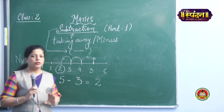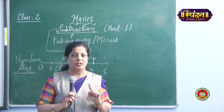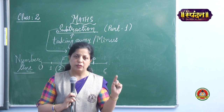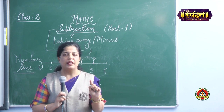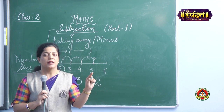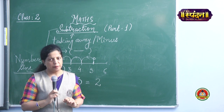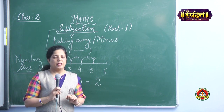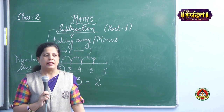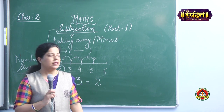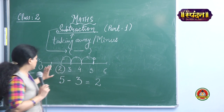Once again I will revise for you. What is a number line? A line representing digits from 0 to 10 is known as a number line, and it helps in finding the answer of subtraction.